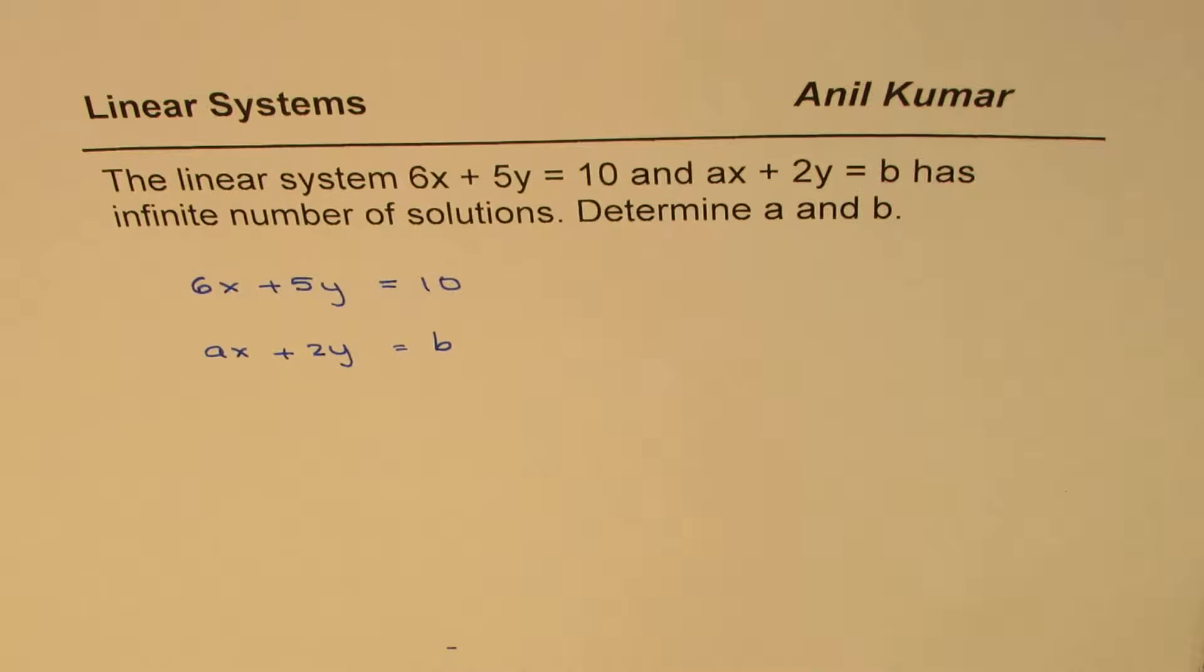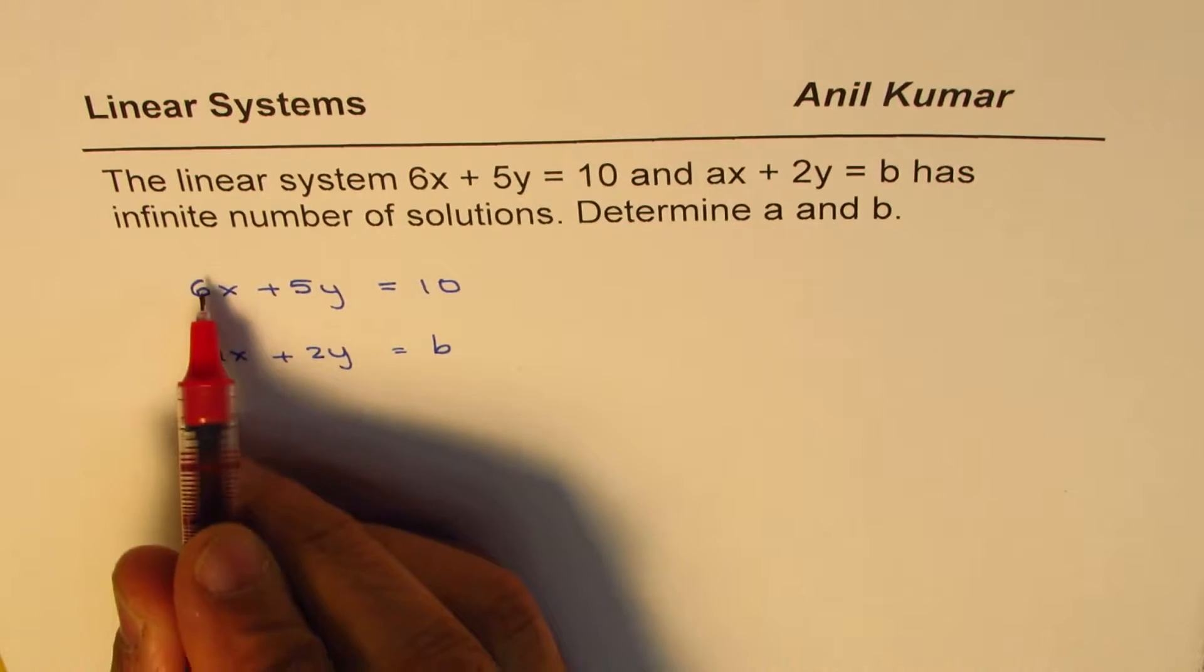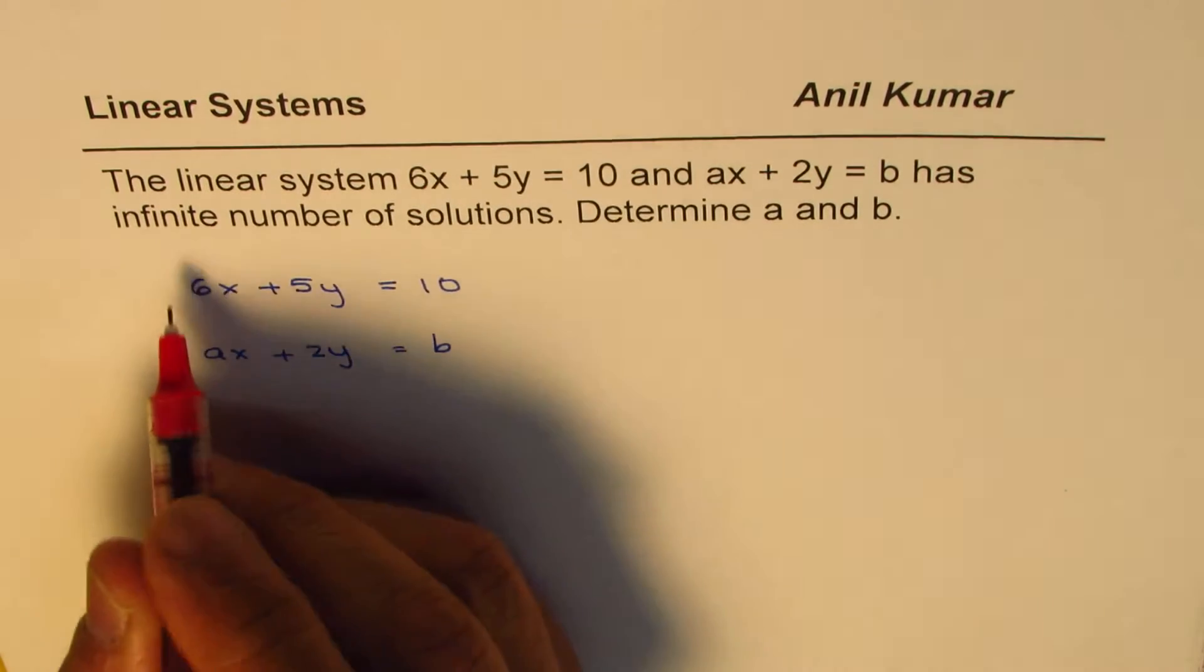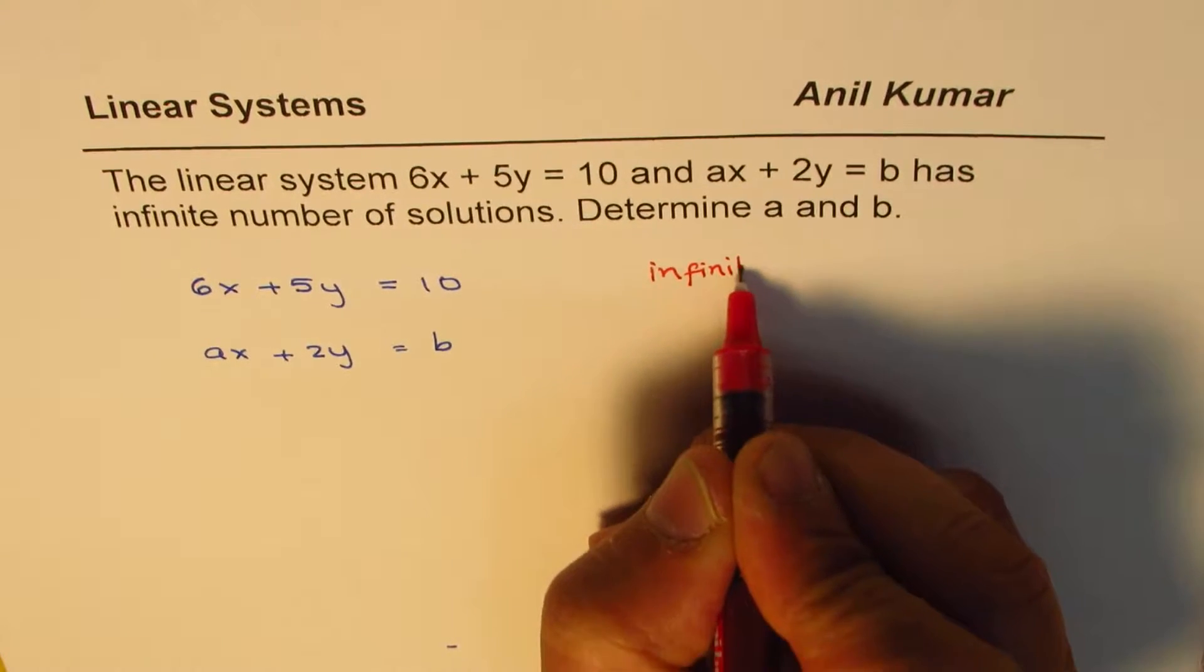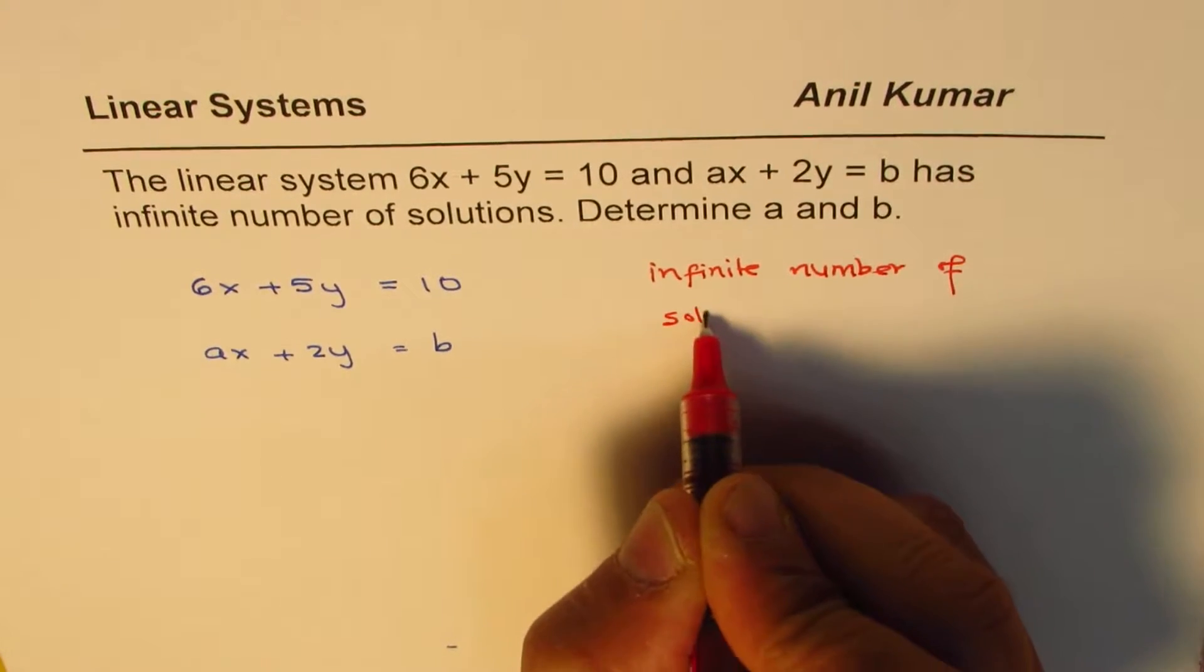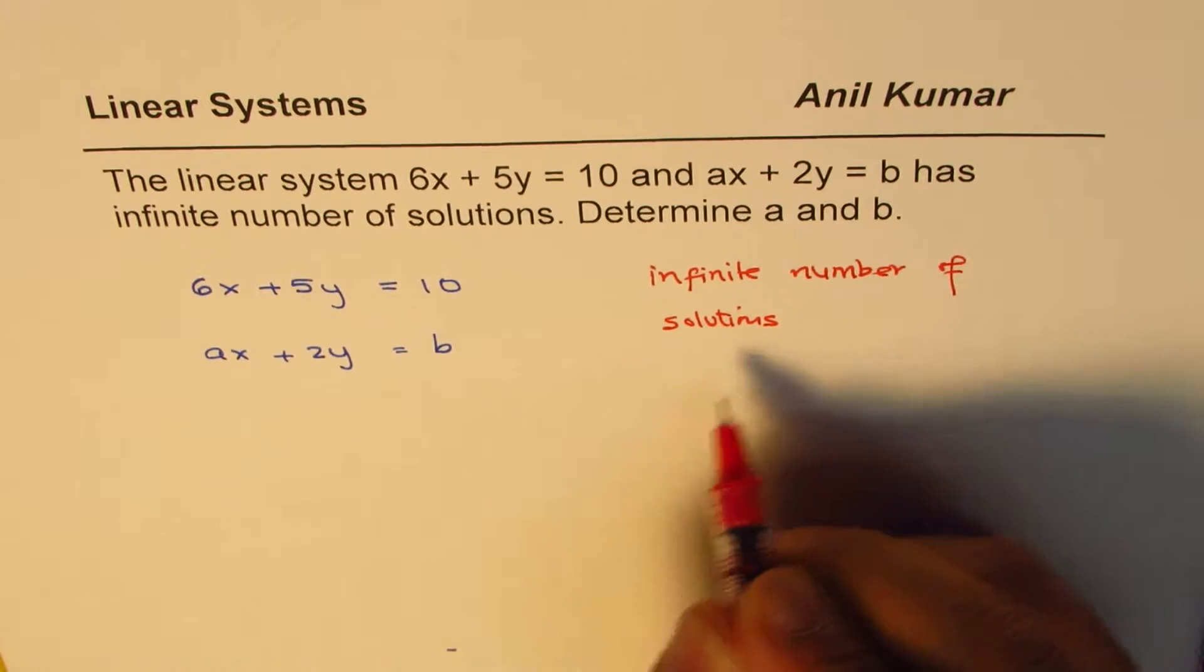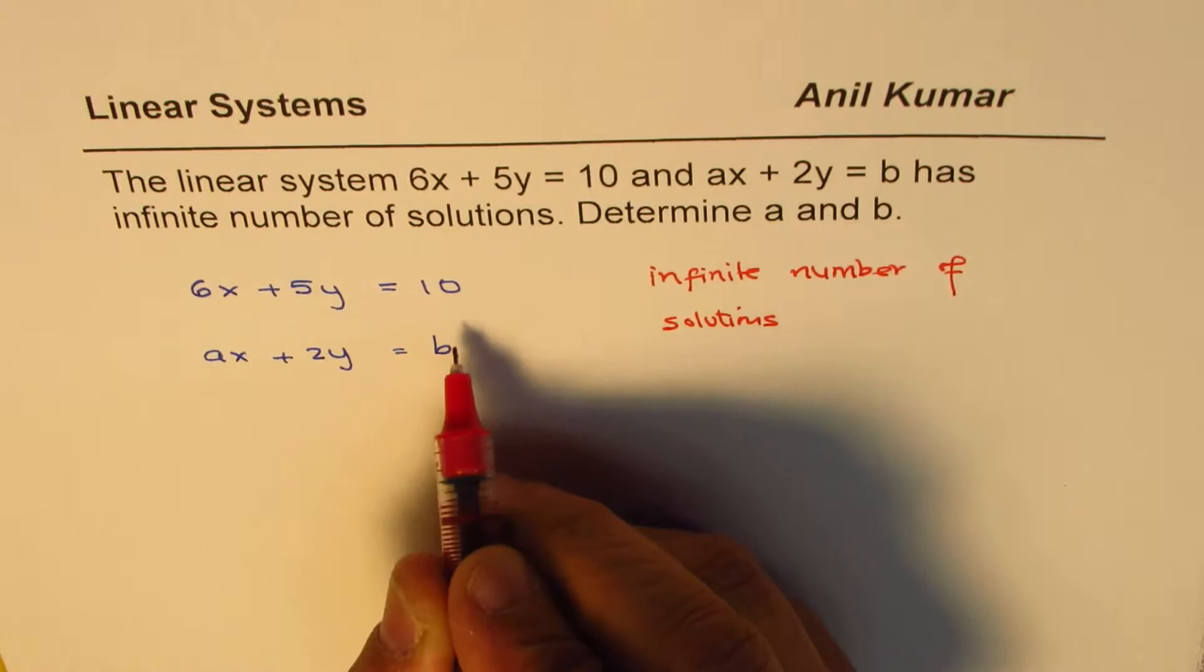If you're looking for infinite number of solutions, that means both equations should be equivalent equations. So that means infinite solutions, both equations should be exactly the same, or if we multiply one by some constant we should get the other number.